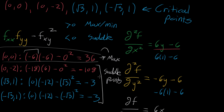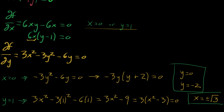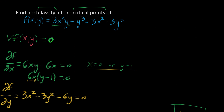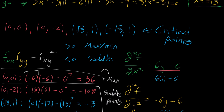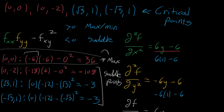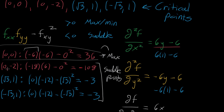So the answer to the question — find and classify the critical points — is that we found four different critical points: (0,0), (0,-2), (√3, 1), and (-√3, 1). All of them are saddle points except for (0,0), which is the local maximum. And all of that is something we can determine without even looking at the graph of the function. I will see you in the next video.